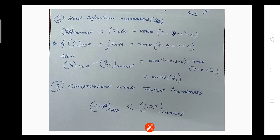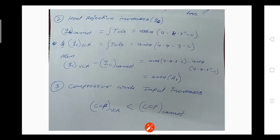The next point: heat rejection increases in the VCR cycle compared to the Carnot cycle. This is indicated on the TS diagram by area A1 — the extra area showing extra heat released. The heat rejected in the condenser for the Carnot cycle is area A4-3''-C, and for the VCR cycle it is area A4-3-C. Taking the difference gives area A1, meaning an extra amount of heat is released in the VCR cycle compared to the Carnot cycle.